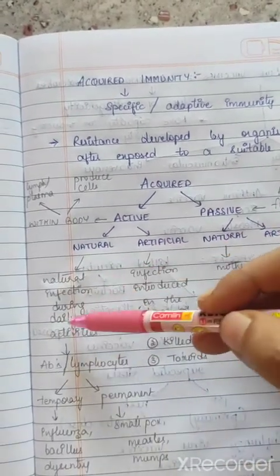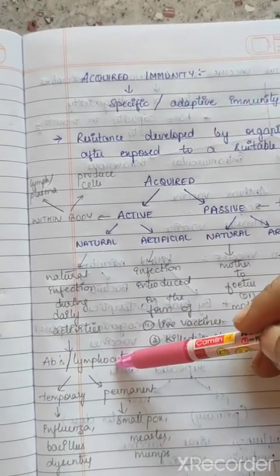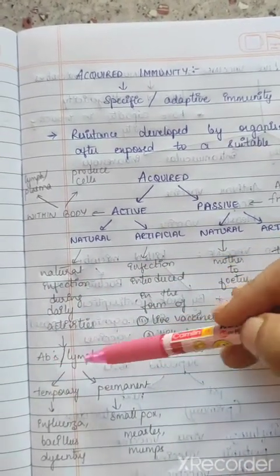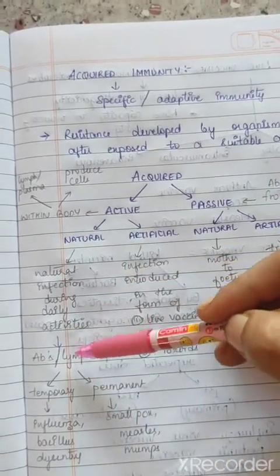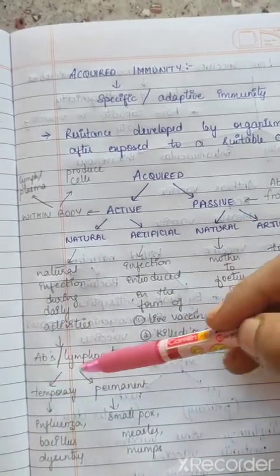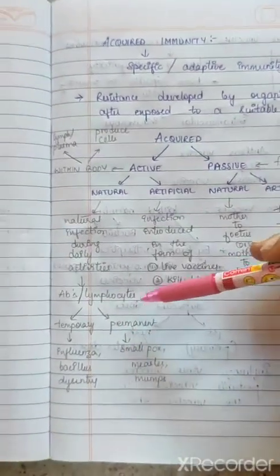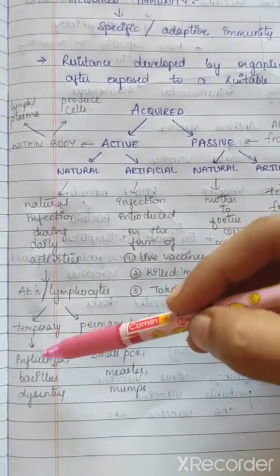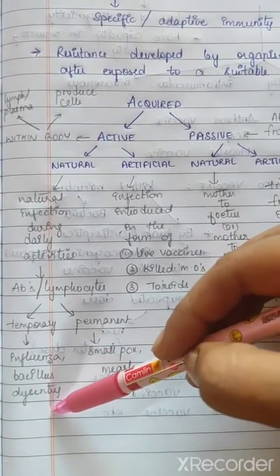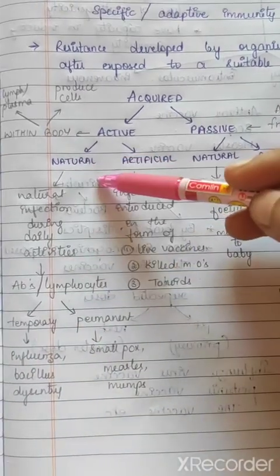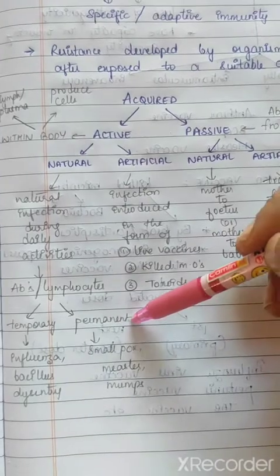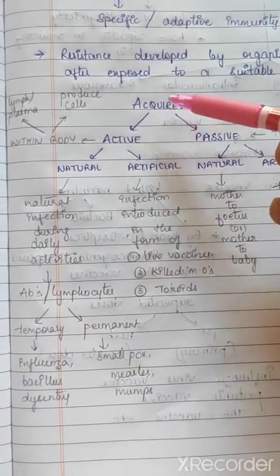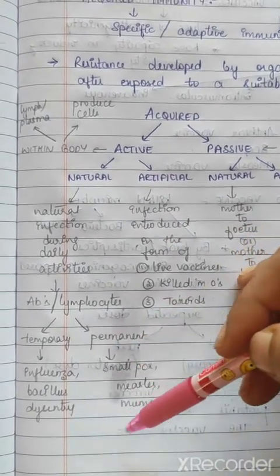In natural active immunity, antibodies or lymphocytes are produced by the body against the microorganism causing the infection, to fight against the antigen. This natural immunity may be temporary or permanent. Examples of short-term immunity include influenza, bacillus, and dysentery. Examples of long-term or permanent immunity include smallpox, measles, and mumps.